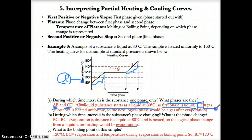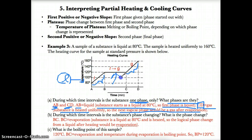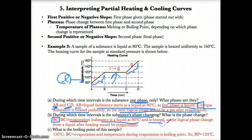Interval C to D must be a gas because, since the substance is heated, the next logical phase after liquid would be a gas after evaporation. Evaporation is in interval BC, which is the time interval during which the substance undergoes its phase change — the answer to part 3B. BC is evaporation because the substance is a liquid at 80 degrees Celsius and the only logical phase change from a liquid when heated is evaporation.